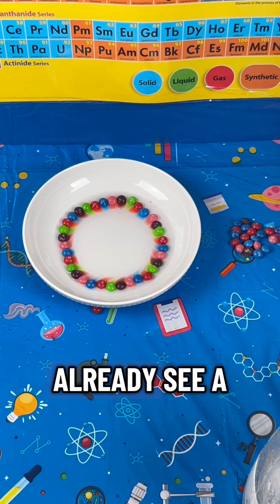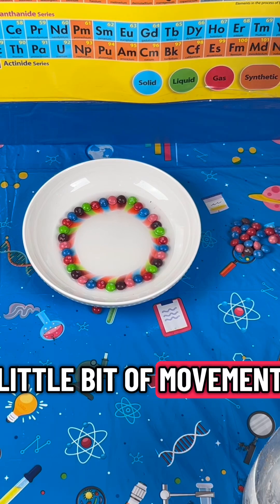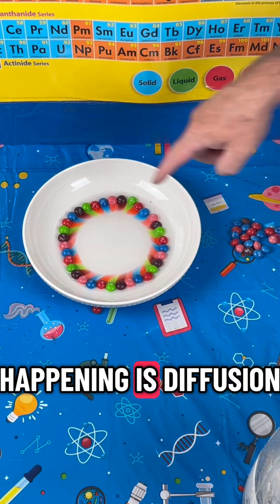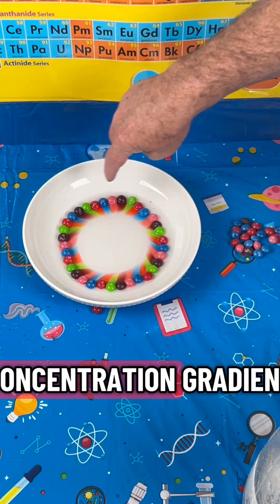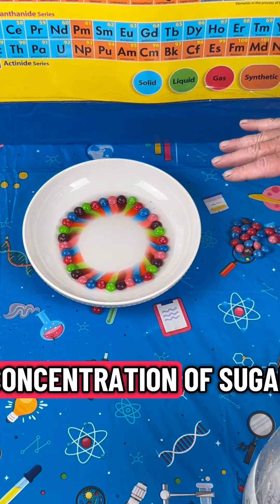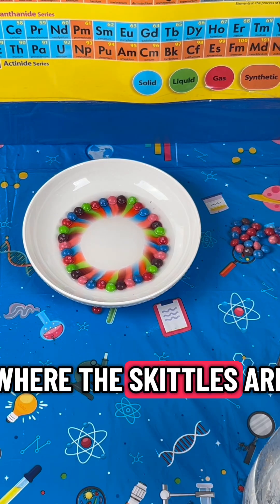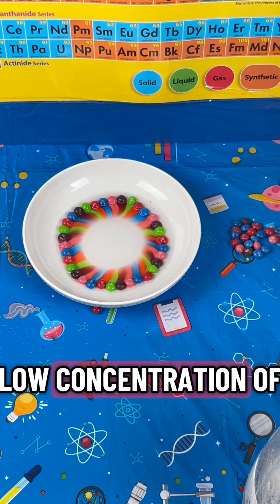We can already see a little bit of movement, and what is happening is diffusion. There's a concentration gradient—a high concentration of sugar where the Skittles are and a low concentration of sugar in the water.